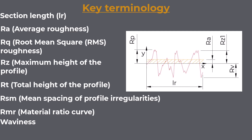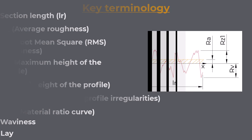Waviness: The larger scale, more spaced-out irregularities on a surface, typically resulting from factors like machine vibrations, heat deformations, or material structure. Waviness doesn't capture the fine details of surface texture but is crucial in applications where these larger-scale deviations matter, such as optical components. Lay: The predominant direction of the surface pattern, usually corresponding to the direction of the last machining process. Lay can influence properties like friction and can be critical in applications like sliding bearings.